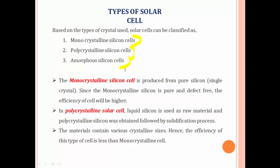Monocrystalline silicon cells are produced from pure silicon as a single crystal. Polycrystalline solar cells use liquid silicon as raw material; polycrystalline silicon is obtained through a solidification process, resulting in materials of various crystalline sizes. The efficiency of polycrystalline cells is somewhat lower than monocrystalline.